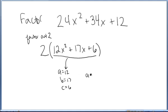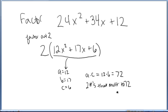I need to find a times c. So I have 12 times 6, which is 72. I found a times c. Now I need to find two numbers that multiply to 72, and at the same time add to the middle term 17. To find that set of numbers, I'm going to take 72 and think about all the ways I can multiply to 72 using two integers.